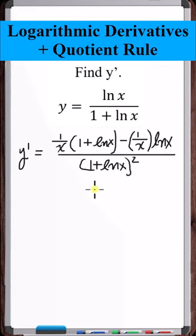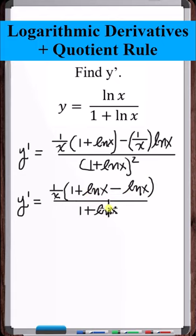So that's the derivative. However, for our final answer, we want to clean this up as much as possible. So let's try first factoring out a 1 over x in the numerator. So we're left with 1 plus natural log of x, minus natural log of x. So the natural log of x gets eliminated.